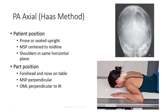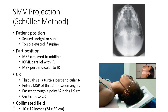A similar view can be performed with the PA Axial Haas method. The patient is placed prone or sitting upright facing the wall bucky. Place the OML perpendicular to the IR and angle the tube 25 degrees cephalic. Center at a point 1 and a half inches below the external occipital protuberance. This should cause the CR to exit about 1 and a half inches superior to the nasion. Collimate to a 10 by 12 inch field size or smaller.